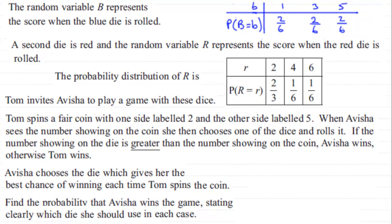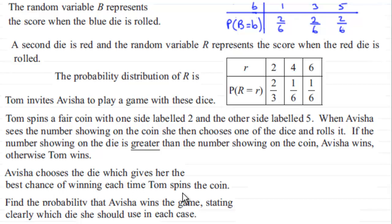Hi. Now in the last part of this question, we're told that Tom invites Avisha to play a game with these dice. Tom spins a fair coin with one side labeled 2 and the other side labeled 5. When Avisha sees the number showing on the coin, she then chooses one of the dice and rolls it. If the number showing on the die is greater than the number showing on the coin, Avisha wins. Otherwise Tom wins. Avisha chooses the die which gives her the best chance of winning each time Tom spins the coin, and we have to find the probability that Avisha wins, stating clearly which die she should use in each case.